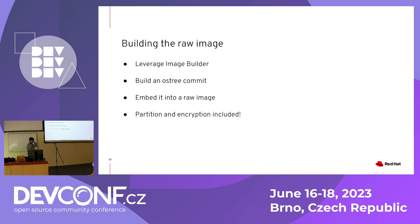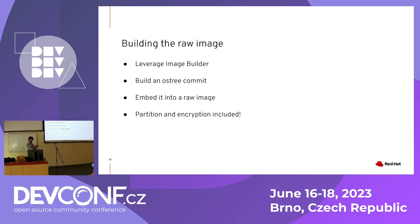Before all of this, once we built the simplified provisioner, we need the raw image to work with — that's going to be the golden image provisioned over 10,000 devices. We build this raw image using Image Builder. First we build an OSTree commit containing the base system, then create a raw image from it. This is when partitioning and encryption are taken into account. Image Builder creates the raw image out of an OSTree commit, and we embed that into the ISO so the simplified provisioner code can uncompress it if needed and flash it onto devices.